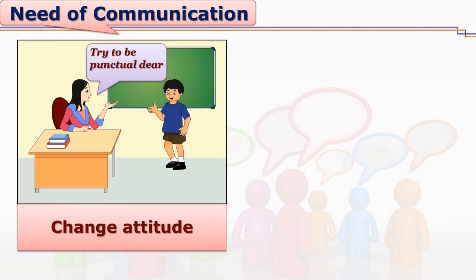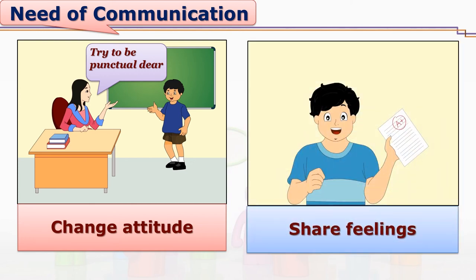Is imparting information, giving instructions, and giving suggestions the only task of a teacher? No. Teachers also try to develop various values and attitudes in learners, so changing a learner's attitude is also a need of communication. Just by scolding, shouting, or punishing, attitudes will not change; teachers must continuously communicate and interact to change attitudes. You can see the boy who got an A+ grade — he is sharing his feelings of happiness through communication. Teachers also need to give learners the chance to share their feelings.